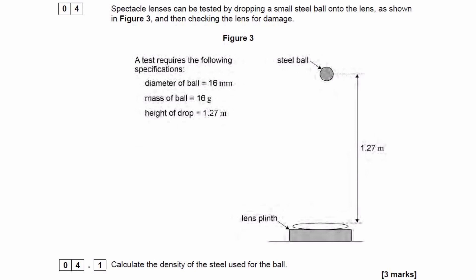We have spectacle lenses can be tested by dropping small steel balls onto the lens, as shown in Figure 3, and then checking the lens for damage. We're given a few different things: the diameter of the ball, we're given the mass, and the height at which it gets dropped.